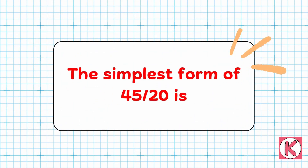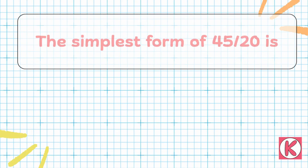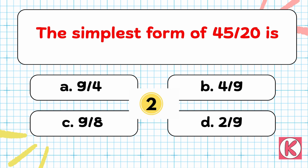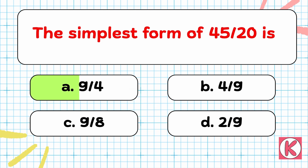Next question. The simplest form of 45 by 20 is... Right answer: Option A — 9 by 4.